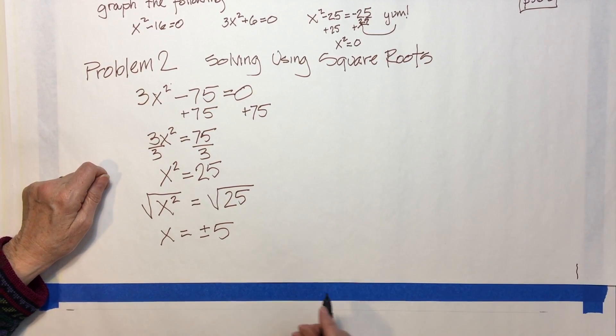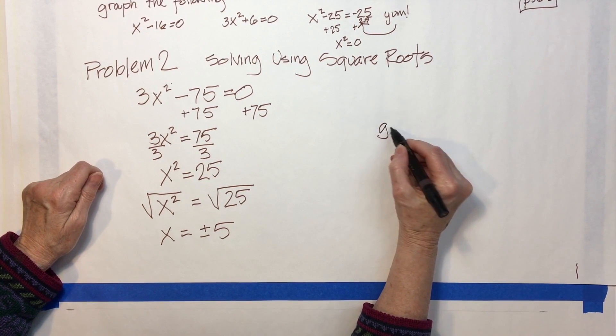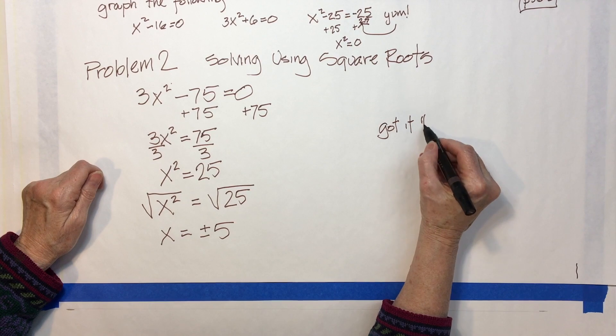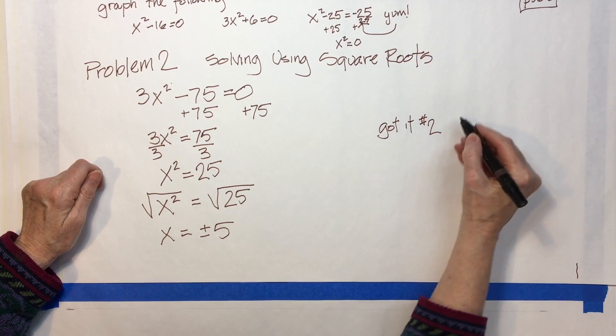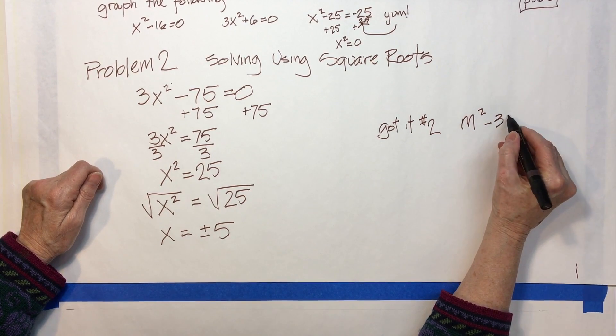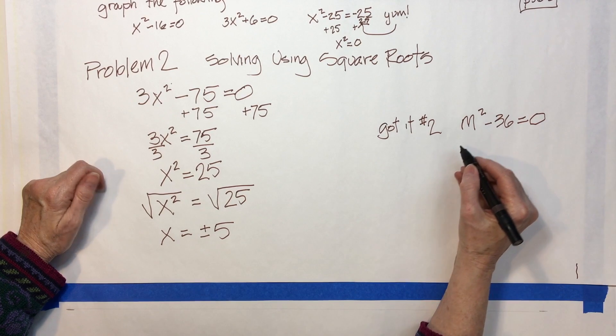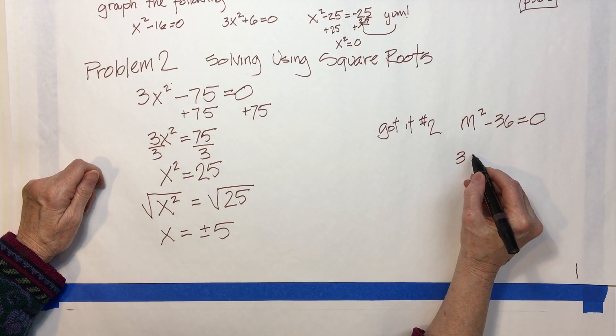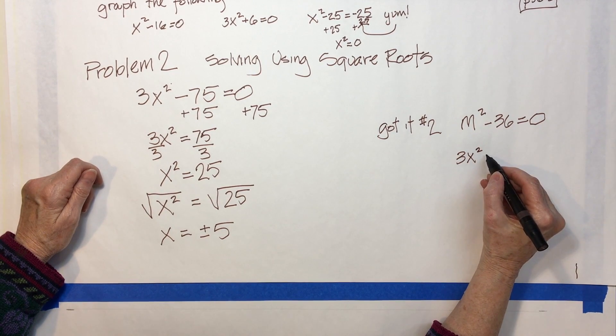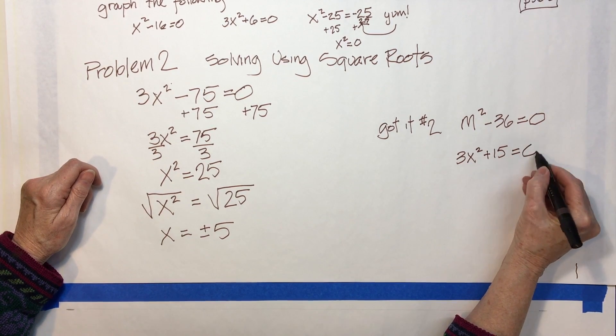The got it's over here is, got it number 2 is m squared minus 36 equals 0, and 3x squared plus 15 equals 0.